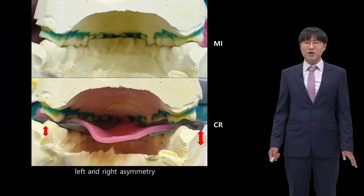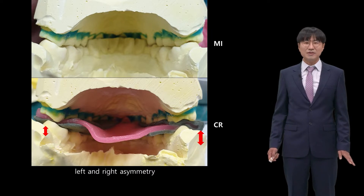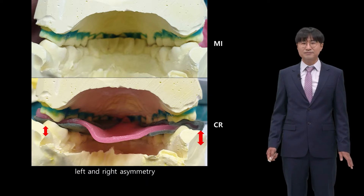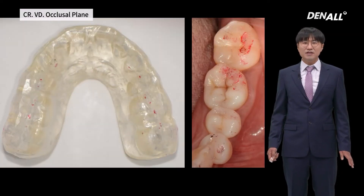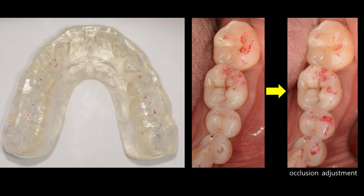If you look at the model, as you saw in the previous video, it was at a position where reproducibility can be clearly achieved, but left-to-right asymmetry was severe. So I considered it a CR-MIP discrepancy. A splint was used, which revealed the discrepancy of occlusion, and occlusal adjustment was made. Until the splint was used, the occlusion was okay to premolars or canines. But using the splint, the discrepancy in occlusion was revealed, and occlusion was adjusted.